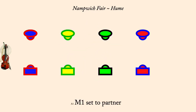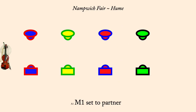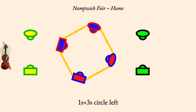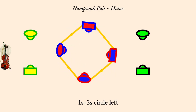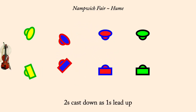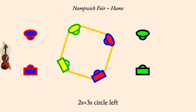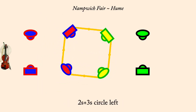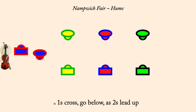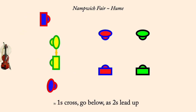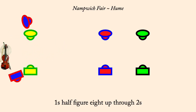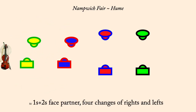Man one set. Ones cast down as twos lead up. Ones and threes circle left. Man two set. Twos cast down as ones lead up. Twos and threes circle left. Ones cross, go below, as twos lead up. Ones half figure eight up through twos. Ones and twos four changes of rights and lefts.